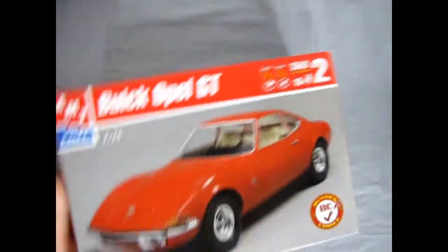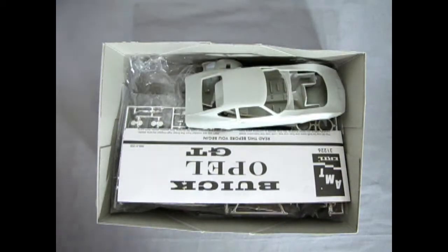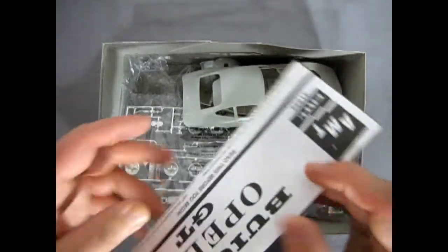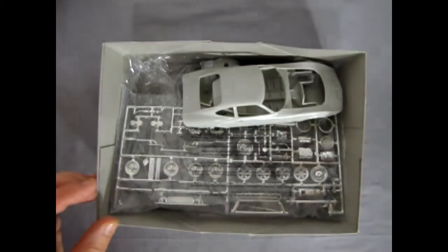So we'll just turn this around and crack the lid open very quickly. Inside of course we have our instruction sheet for the Buick Opel GT which we'll take a look at in a little while.